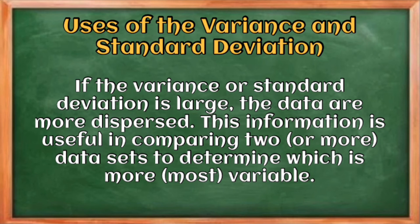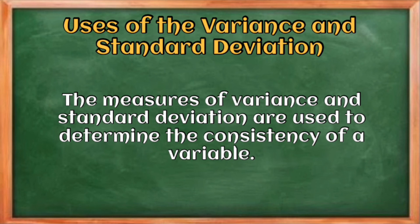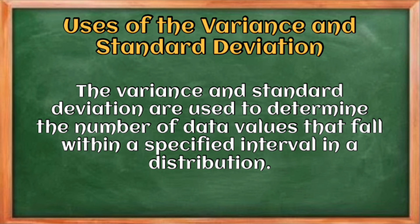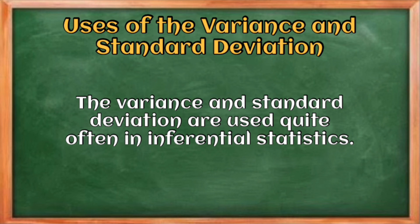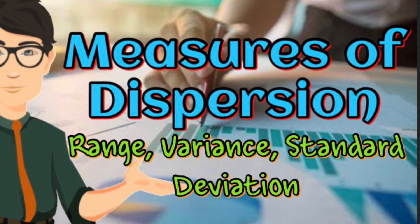What are the uses of variance and standard deviation? If the variance or standard deviation is large, the data are more dispersed. This information is useful in comparing two or more data sets to determine which is more variable, and to test a variable's consistency. It is also used to determine the number of data values that fall within a specified interval in a distribution, and variance and standard deviation are used quite often in inferential statistics.